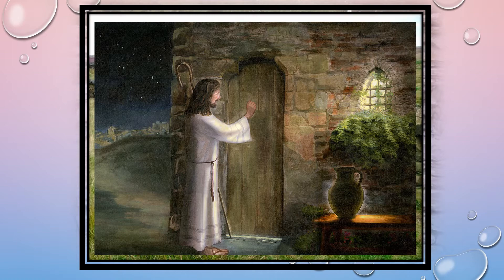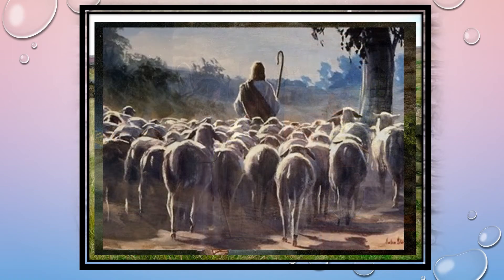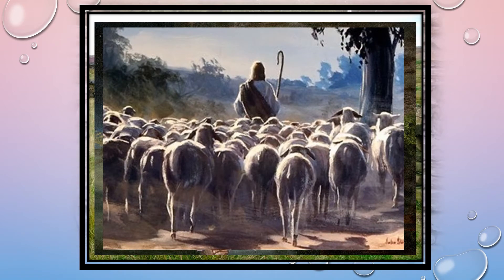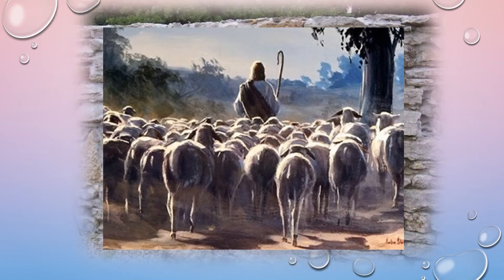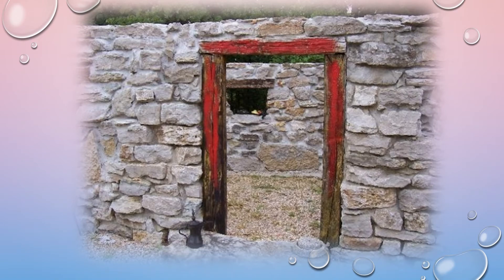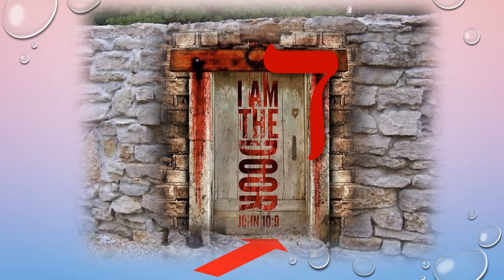Back to John 10, verse 4: And when he brings out his sheep, he goes before them, and the sheep follow him, for they know his voice. Yet they will by no means follow a stranger, but will flee from him, for they do not know the voice of strangers. Then Jesus said to them: Most assuredly I say to you, I am the door of the sheep. All who came before me are thieves and robbers, but the sheep did not hear them. I am the door. If anyone enters by me, he will be saved and will go in and out and find pasture. The thief does not come except to steal and to kill and to destroy. I have come that they may have life and that they may have it more abundantly.